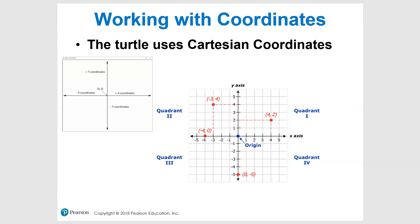Here we are with part two of our introduction into Python Turtle. We're going to start out using some of the commands we saw before — forward, right, left, and all that kind of stuff. Those are great, but the more precise way to move things around and draw things effectively is to use a coordinate system.